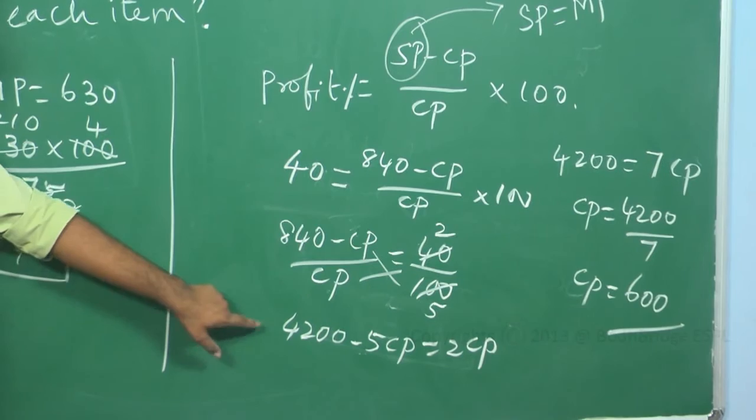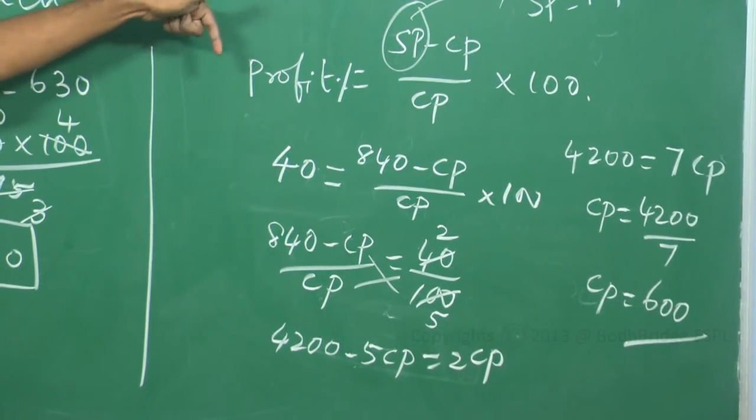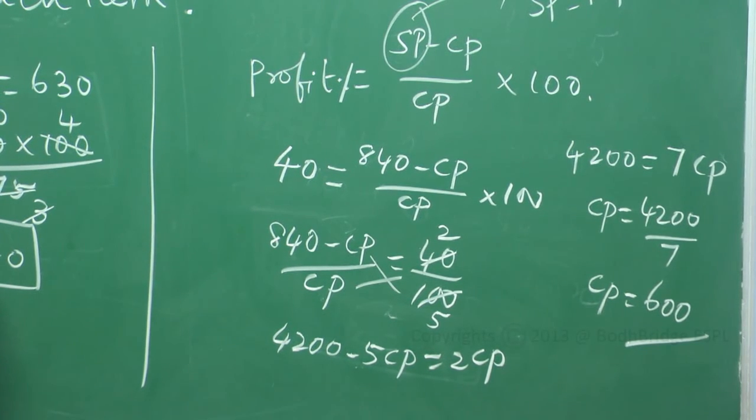Here, we are bringing the minus 5CP to other hand side. So that it is becoming 7CP is equal to 4200. CP is equal to 4200 by 7. That is 600.